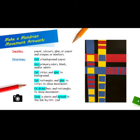Now it's your turn. You will make a Mondrian movement artwork. For this project, you will need paper, scissors, glue, or paper, crayons, and markers.